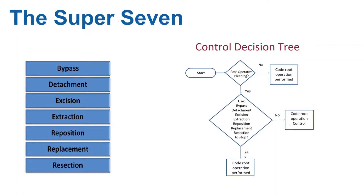The root operation Control is used to represent procedures performed to treat post-procedural or post-operative bleeding. If one of these root operations — Bypass, Detachment, Excision, Extraction, Reposition, Replacement, or Resection — is performed to stop the bleeding, then Control should not be coded separately.